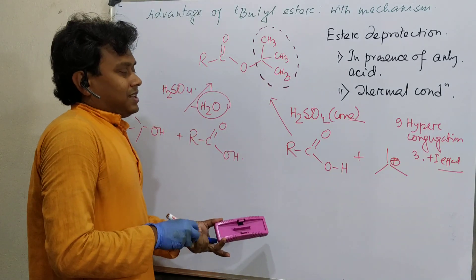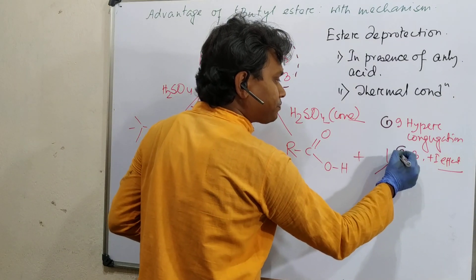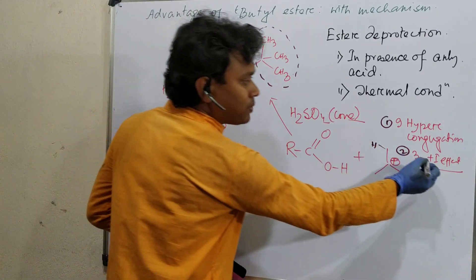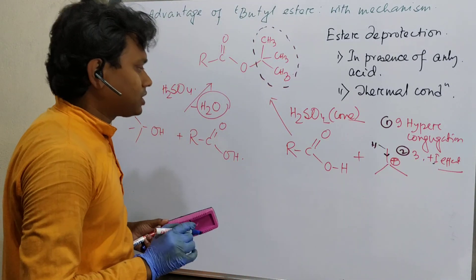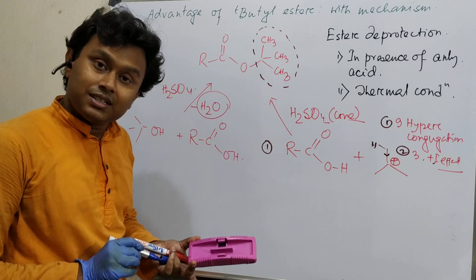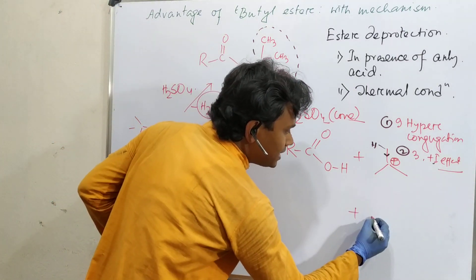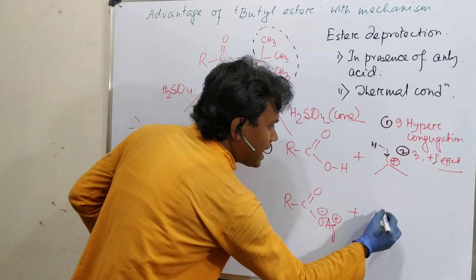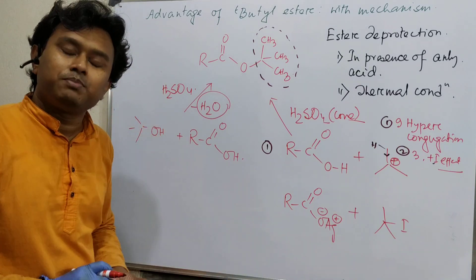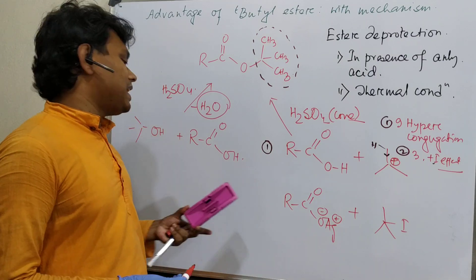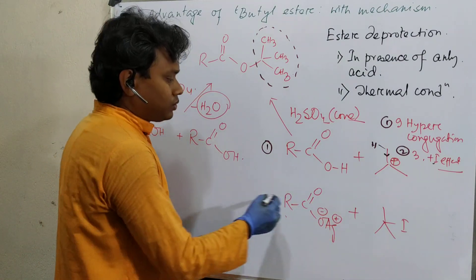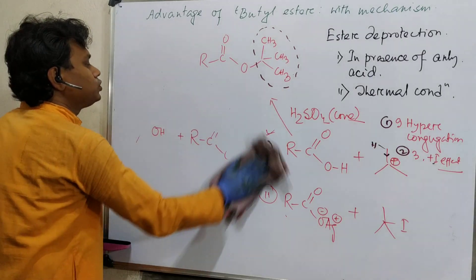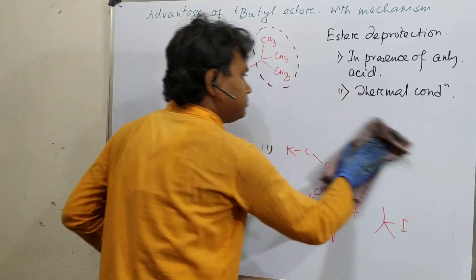Note that hyperconjugation and the +I effect are not the same: hyperconjugation operates through hydrogen and involves a pi-type bond, while the +I effect operates through the sigma bond. A third strategy uses the silver salt of the carboxylic acid with tert-butyl iodide. The silver salt method is often more practical. In this way, the tertiary butyl ester can be prepared and purified.